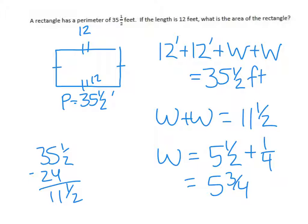I could do that with numbers as well. I could do 11 and a half divided by two, which is the same as 23 halves times a half, which is 23 fourths, which equals five and three fourths. Get the same answer. So that's what my width is.